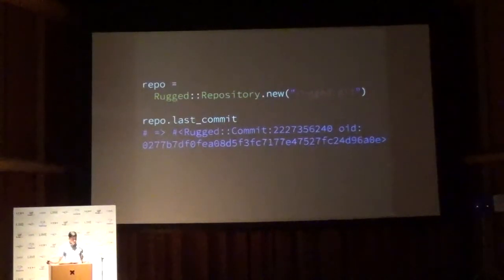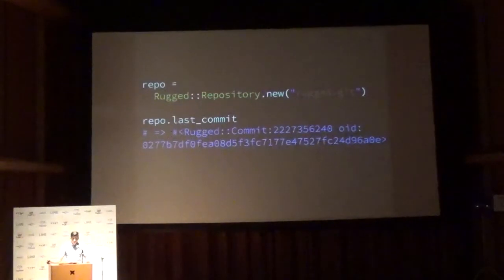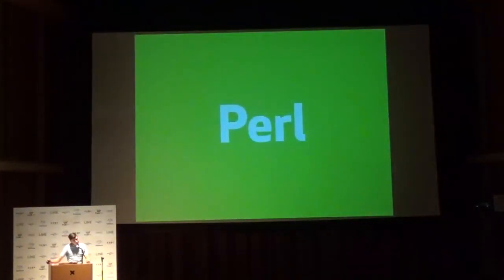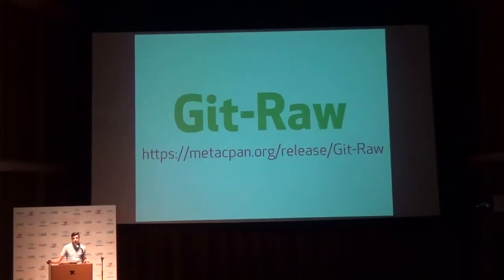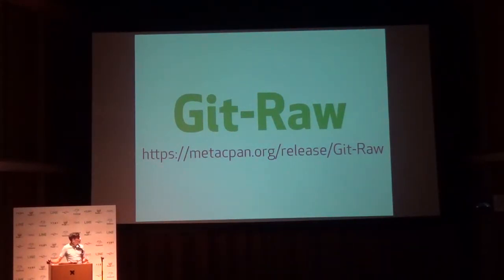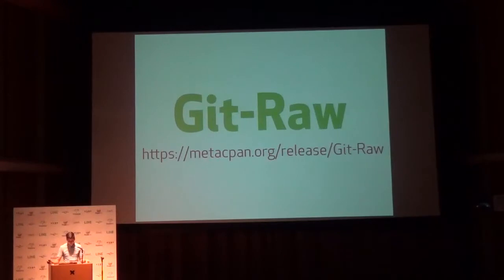Just like in Ruby, we needed an extension that links against libgit2 — and there is one for Perl called Git::Raw. It appears to be on CPAN and it's developed on GitHub. At a cursory glance it looked like it works pretty well and looks pretty complete. But I've never used it, so it might be terrible — I hope nobody who is here wrote it.